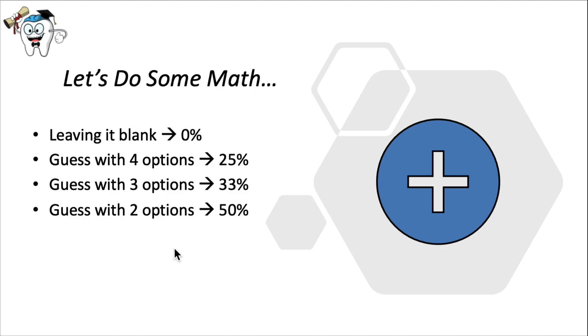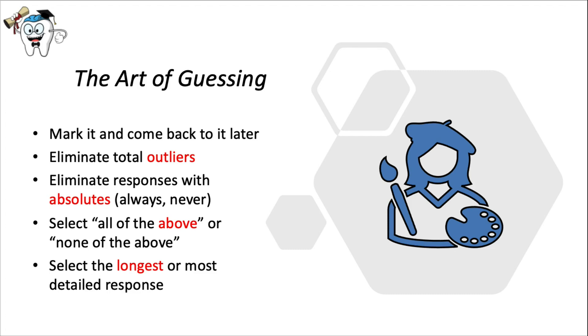And if you can eliminate two options, then you have a 50% shot of getting it right. So remember to implement the process of elimination and attempt all of the questions before you click that final submit button.